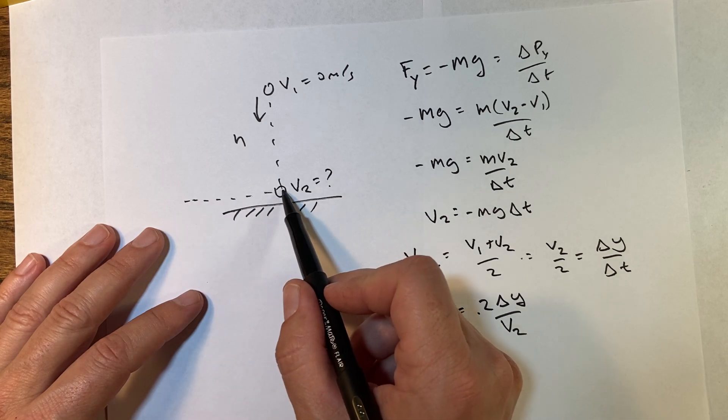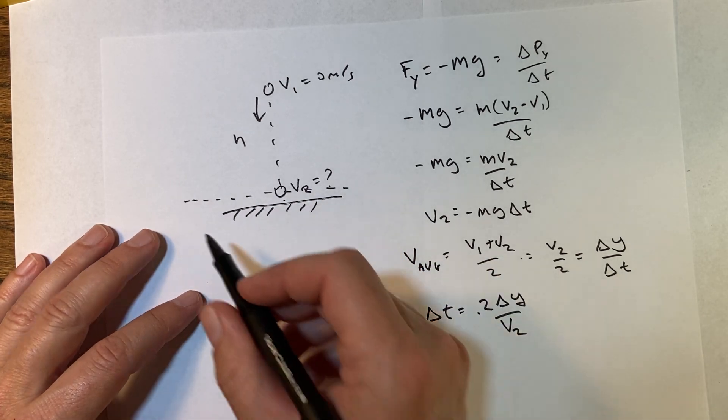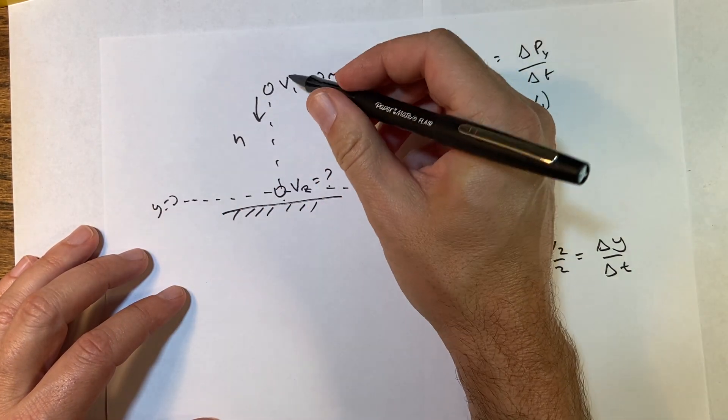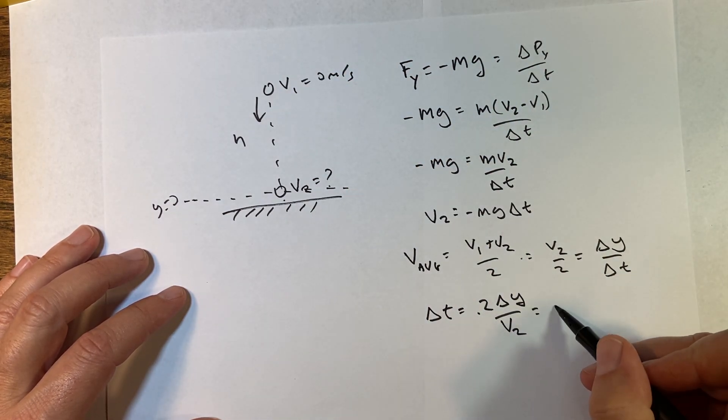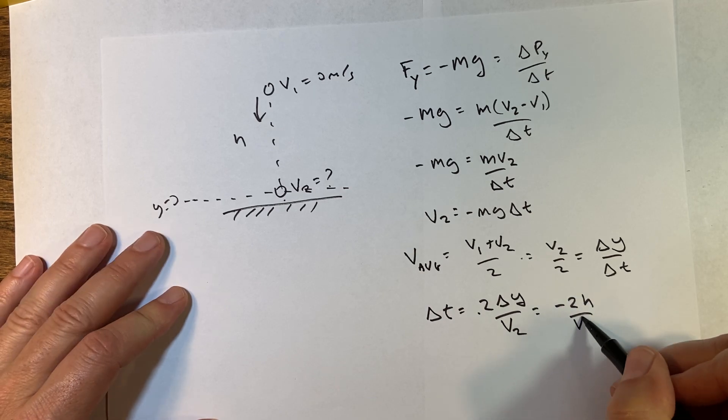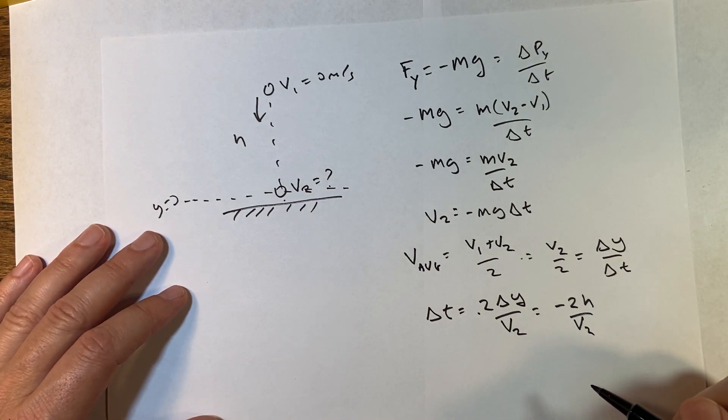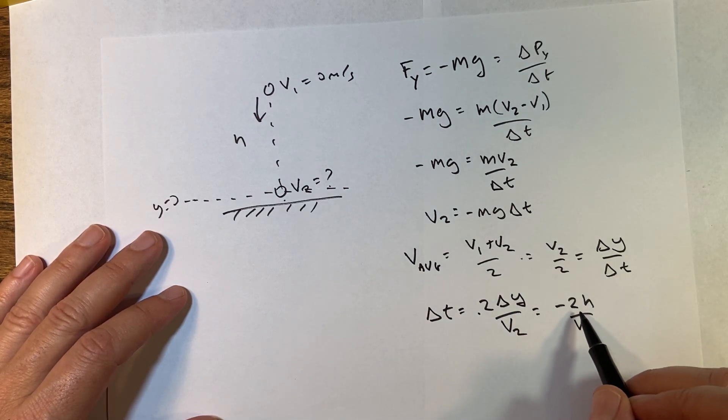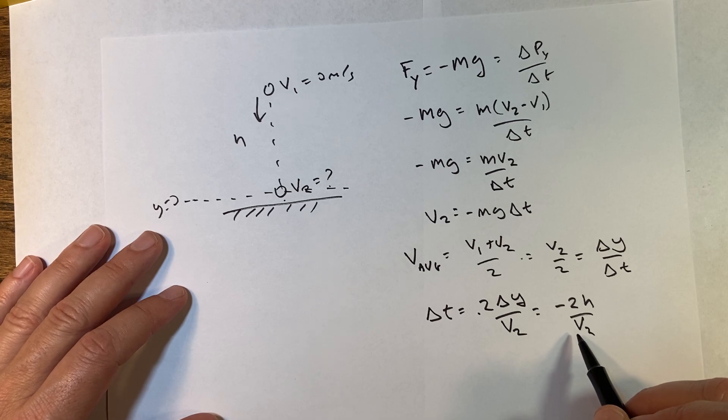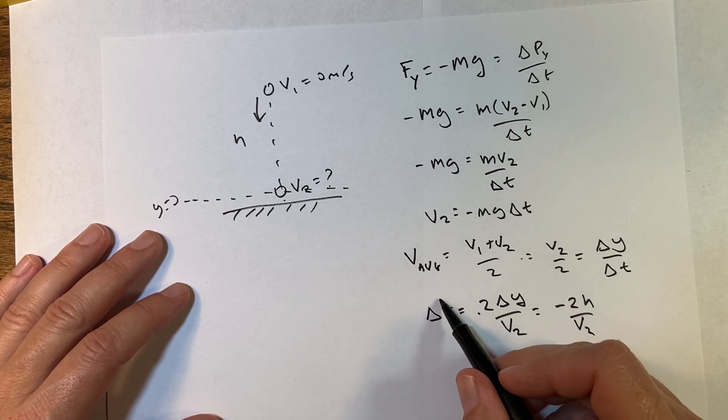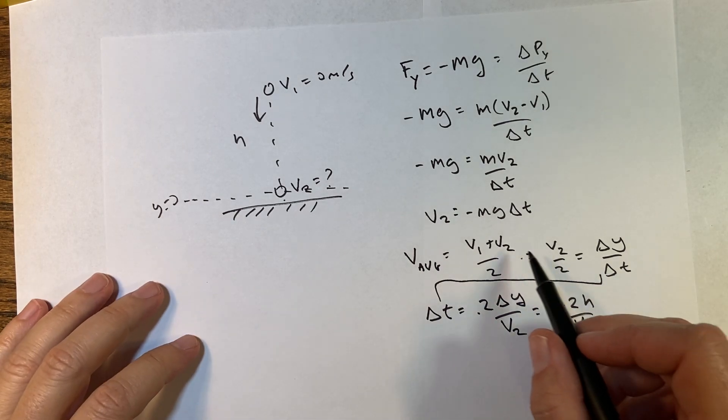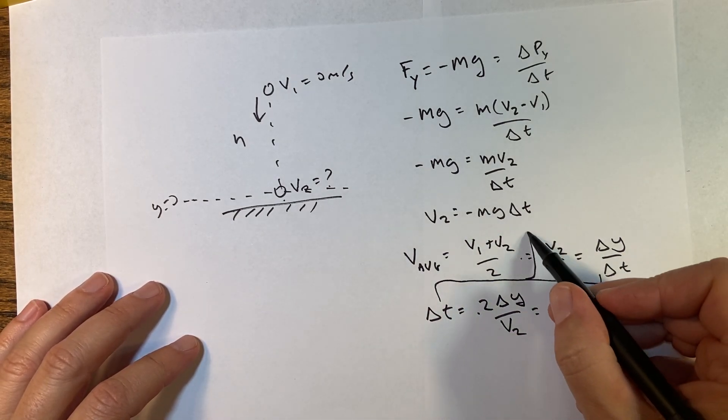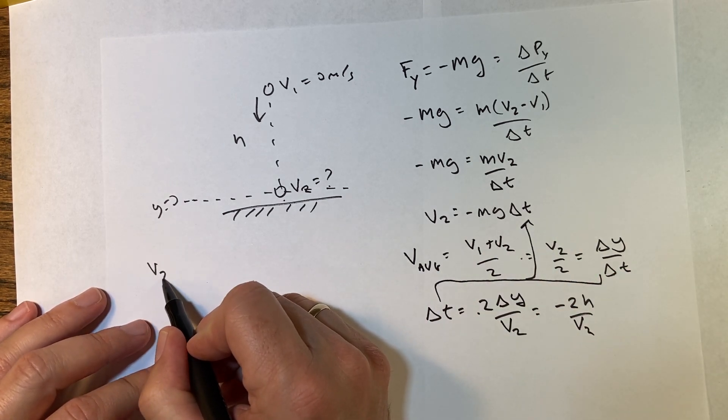And so what's delta y? It doesn't really matter but I'll call this my y equals zero, so the initial y is h, the final y is zero. So this delta y is going to be negative 2h over v2. Yeah, I was just thinking, 'Wow, I have a negative time,' but I don't because v2 has to be negative. Okay, so now I'm going to put this in up there. Wait, I'm putting it in here, right there.